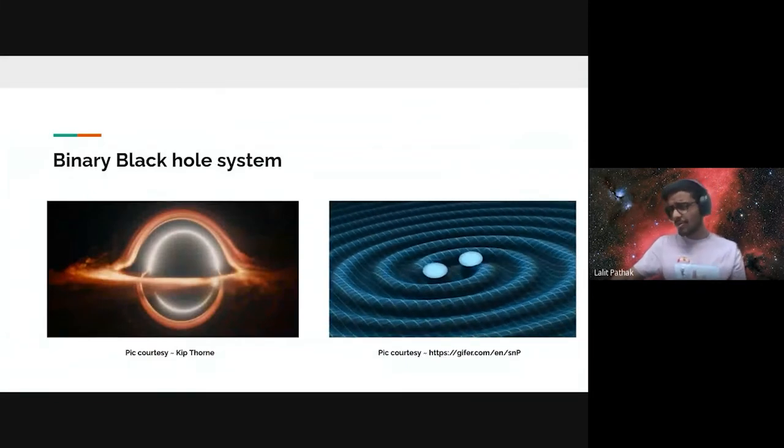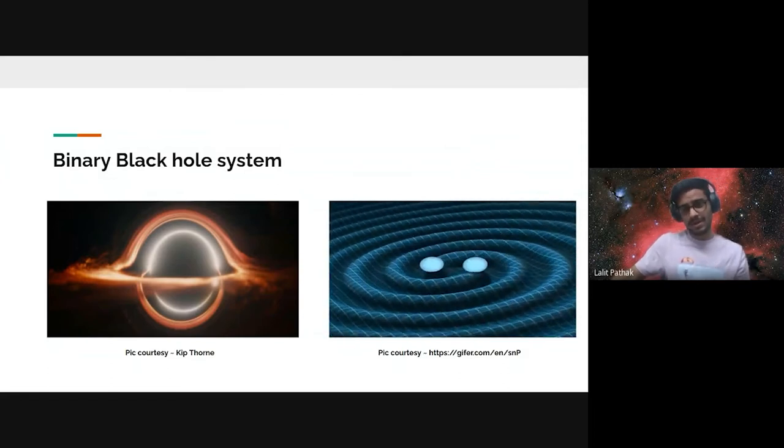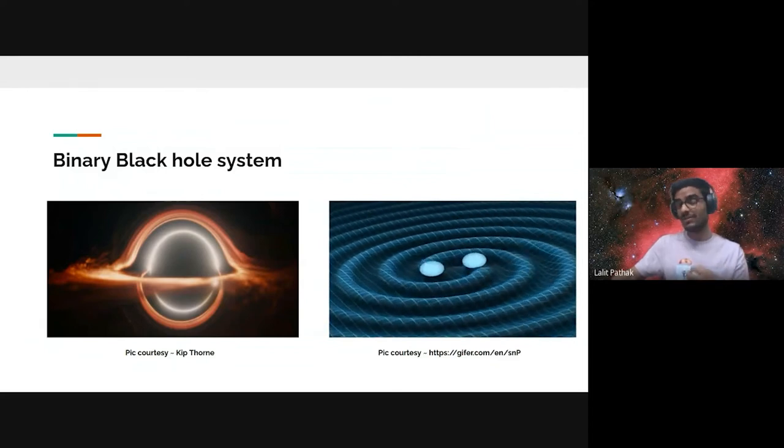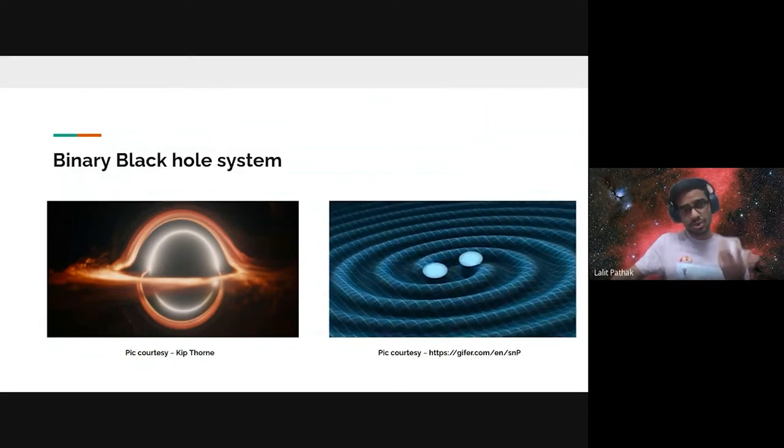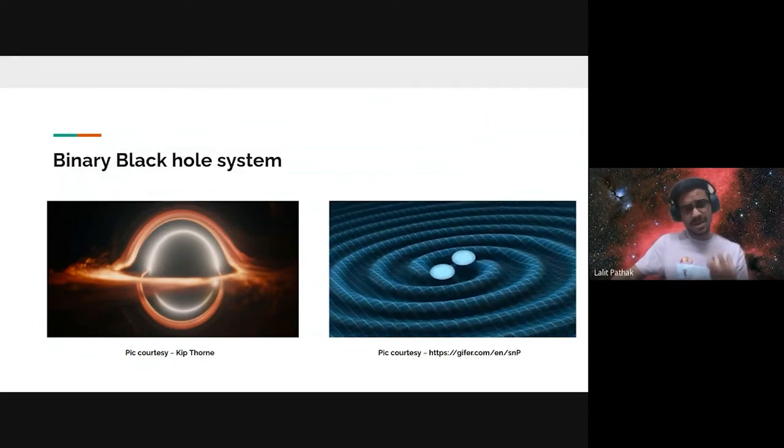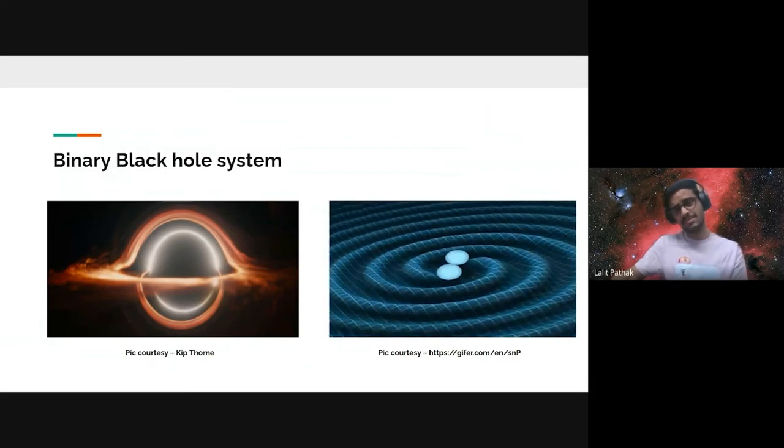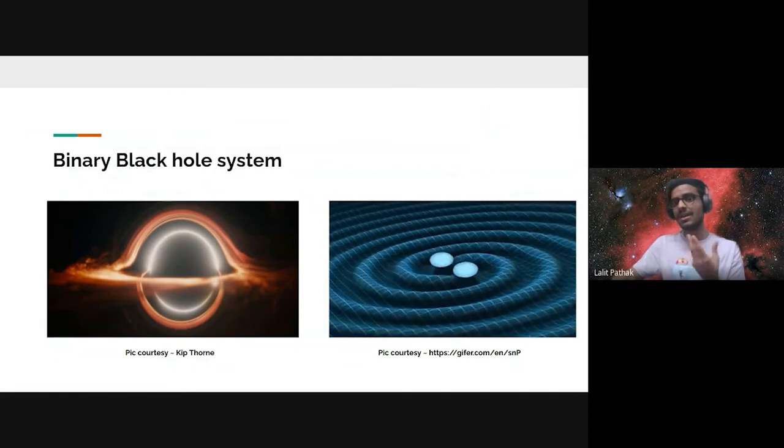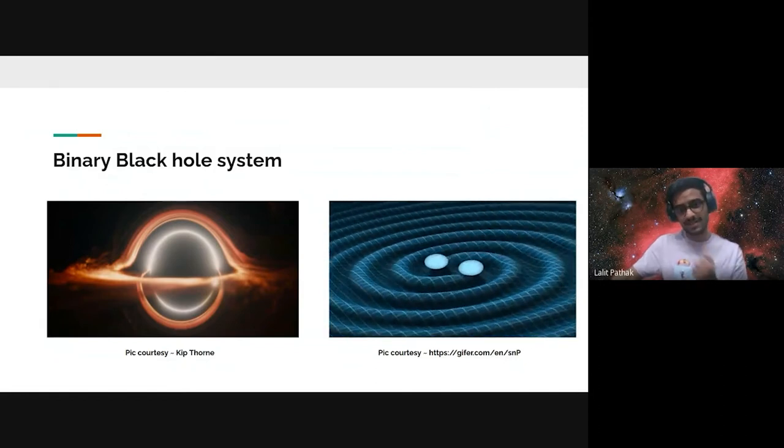A black hole is a place in space where the gravity is so strong that even light can't escape its pull. Most black holes are made when a massive star dies. Not every star ends up being a black hole. For instance, our own star, the sun, would become a red giant in the last stages of its lifetime.